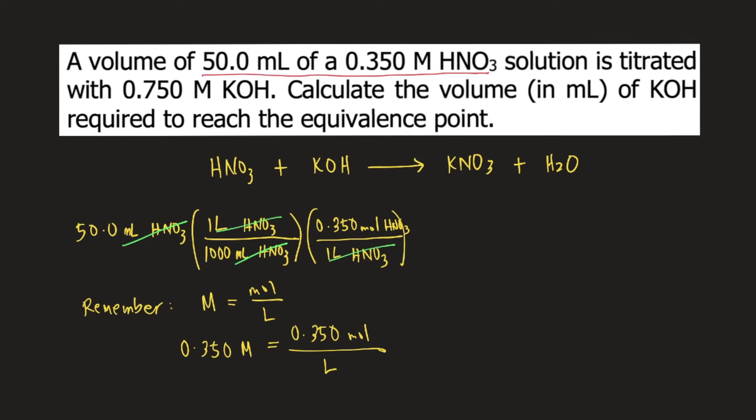Looking at the reaction, 1 mole of HNO3 reacts with 1 mole of KOH. Plug that into your equation. 1 mole of HNO3 reacts with 1 mole of KOH. So moles of HNO3 will cancel, and you have moles of KOH.